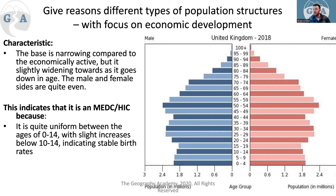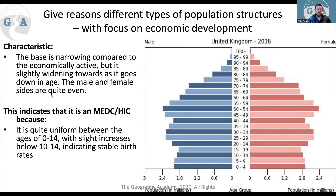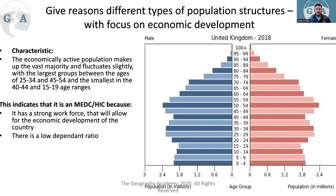You may or may not be familiar with the UK specifically, and that's fine - we're just looking at roughly what's going on. This indicates it's an MEDC (More Economically Developed Country) or HIC (High Income Country). It is quite uniform between 0 and 14 with a slight increase from 10-14, indicating stable birth rates. Going back to chapter one, stabilized birth rates are a good indication you're in Stage 4 of the Demographic Transition Model, which likely means you're a more economically developed country. This means a very strong workforce, loads of economic development, and a low dependency ratio.